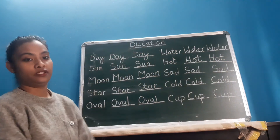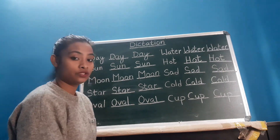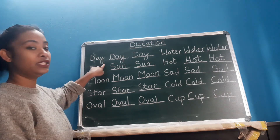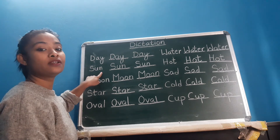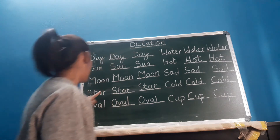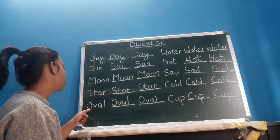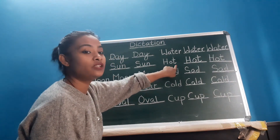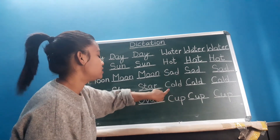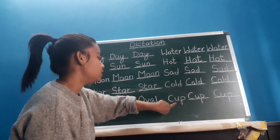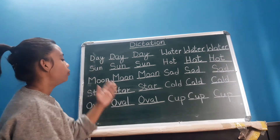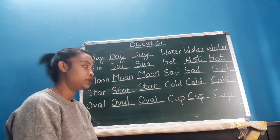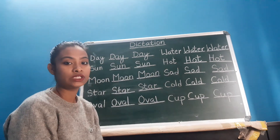Okay, children. Let's repeat again. There are 10 words for your dictation examination and you have to learn these spellings. Starting from the first: D-A-Y day, S-U-N sun, M-O-O-N moon, S-T-A-R star, O-V-A-L oval, W-A-T-E-R water, H-O-T hot, S-A-D sad, C-O-L-D cold, C-U-P cup. What you have to do is write these dictation words in your picture dictionary homework copy. I will send you the details. Till then, bye.